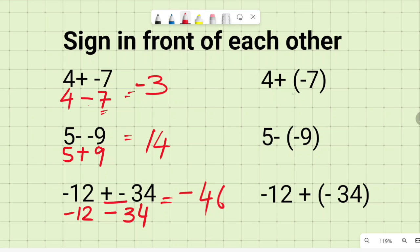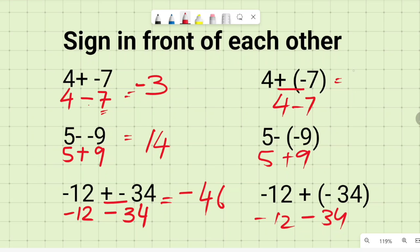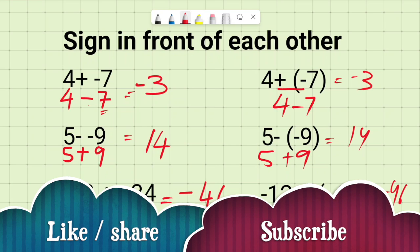The same rules apply when you have brackets with signs in front: plus and minus gives minus seven, minus and minus gives plus. So you get the same answers: negative three, fourteen, and negative forty-six. I hope this video has been helpful. Please share and subscribe to our channel, and let me know if you want me to solve anything else. Have a nice day.